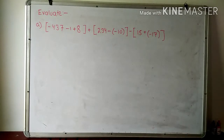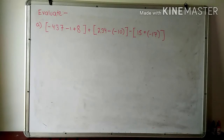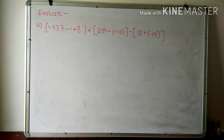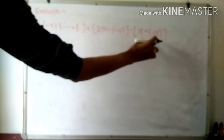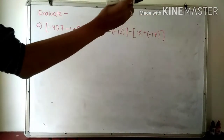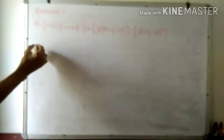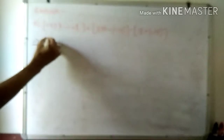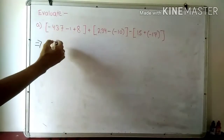As I have already told you in previous classes, if you are going to solve any number problem we have to follow certain basic rules called BODMAS. We are going to apply the same rules here and solve this equation step by step. First of all, we have to solve inside the bracket — all the parts inside the bracket. After solving the numbers inside the bracket, then we expand. So following are the steps: minus 437 minus 1 minus 438 plus 8.